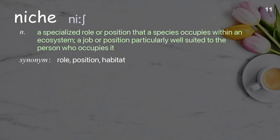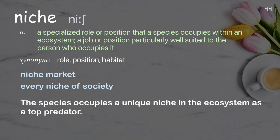Niche: A specialized role or position that a species occupies within an ecosystem; a job or position particularly well suited to the person who occupies it. Examples: niche market, every niche of society. The species occupies a unique niche in the ecosystem as a top predator.